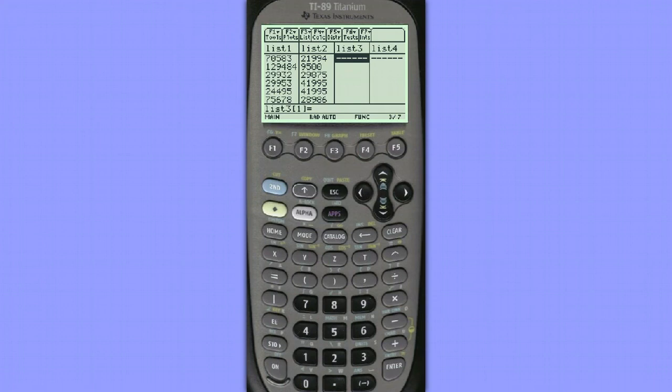So to get our residual plot we need to begin by putting our residuals in list 3. To do this I'm going to go to the top. I'll hit second and the minus sign. Notice it says varlink above it.